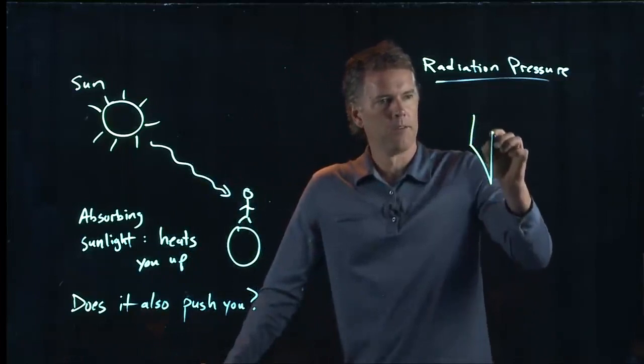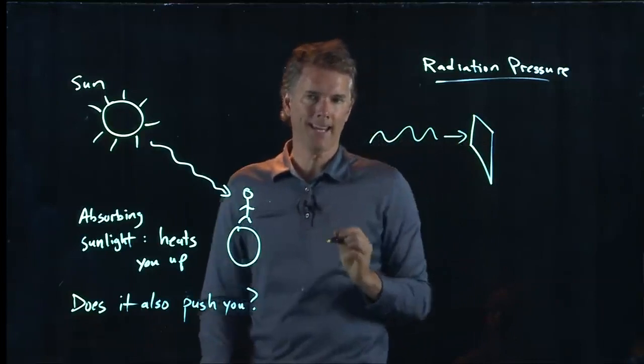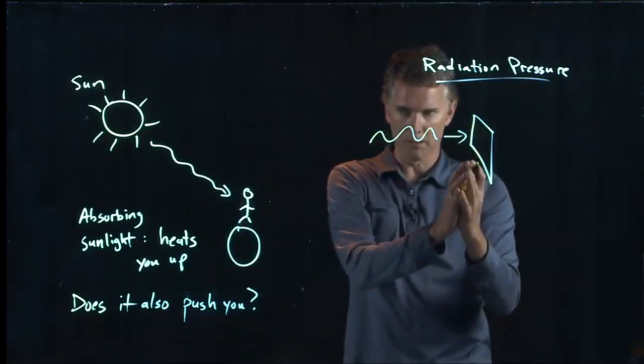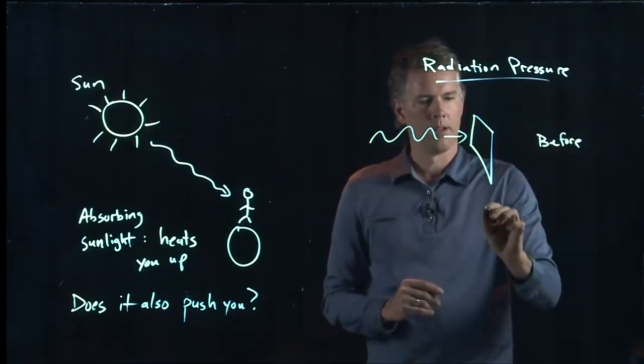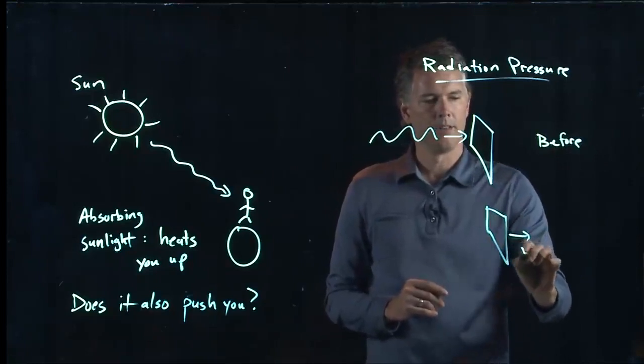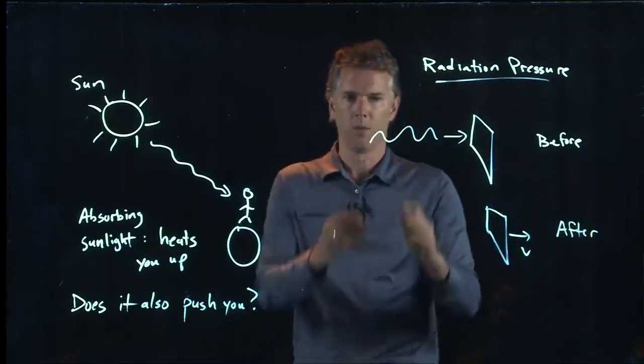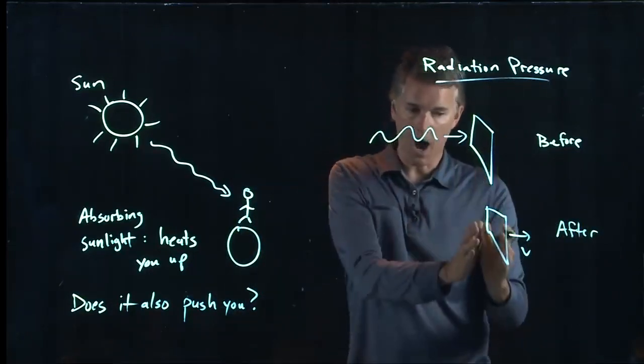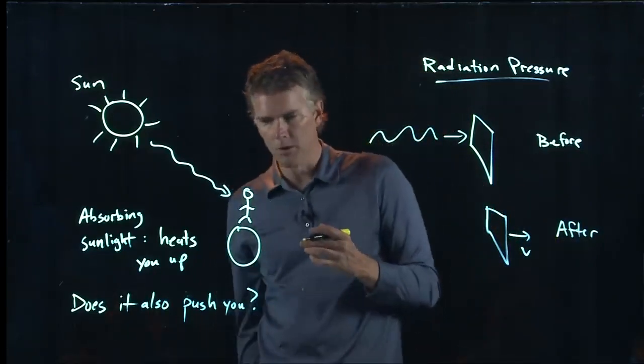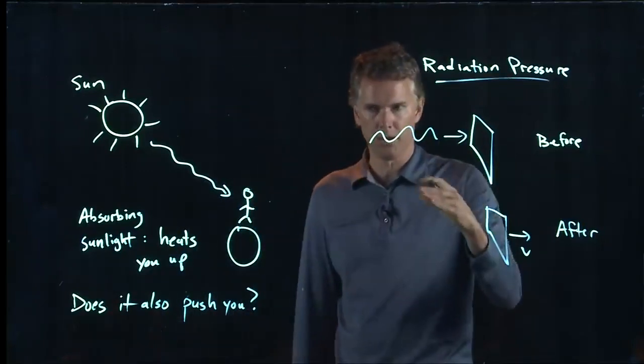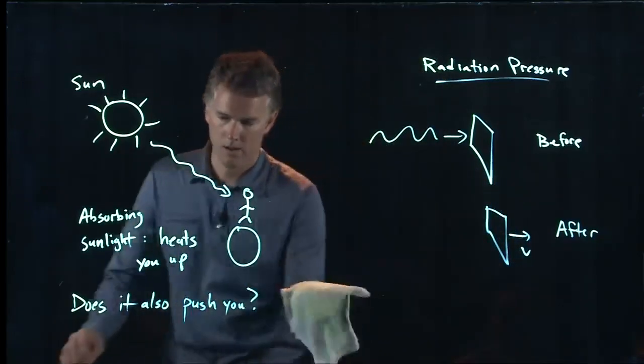So if I think about an absorber, and here comes a wave, and it hits the absorber and gets absorbed in the material, if this is the before picture, then after, this thing starts moving. The wave is gone. It got absorbed. The object now is moving. It gets pushed away. So there is a momentum transfer between these two, and we need to understand exactly how that works.